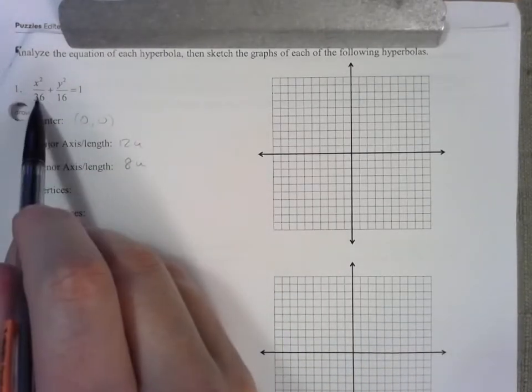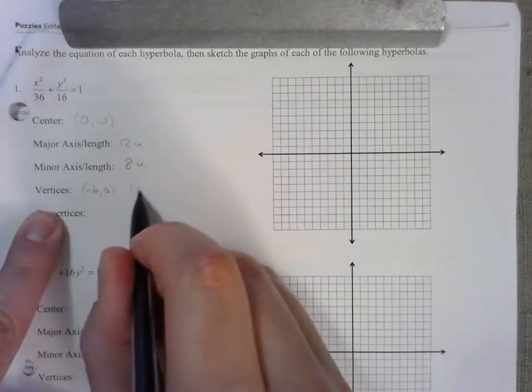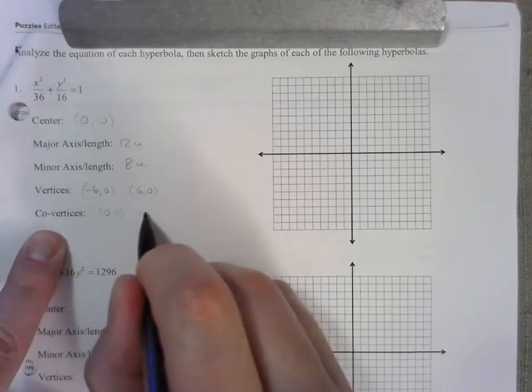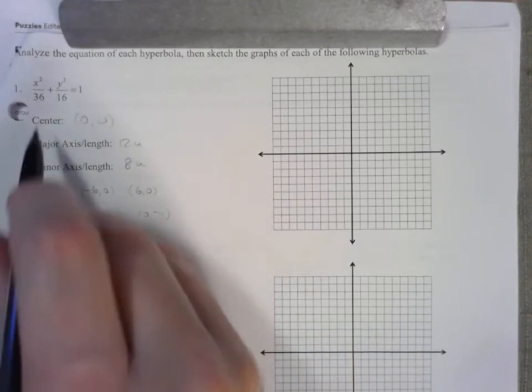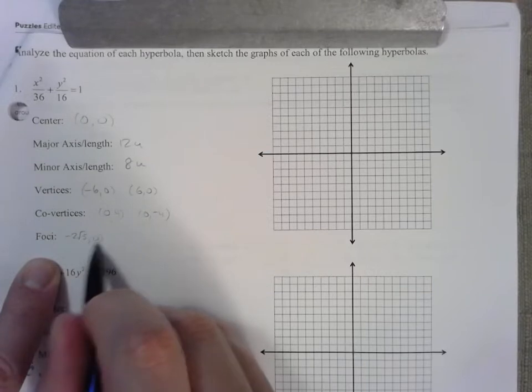The vertices would be 6 left and right from (0,0): (-6,0) and (6,0). The co-vertices, up and down, up 4, down 4. The foci, do your subtraction, that's 2√5 from the previous page. Let's go left 2√5 and right 2√5 from your center.